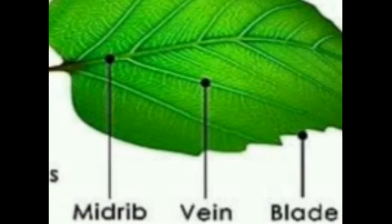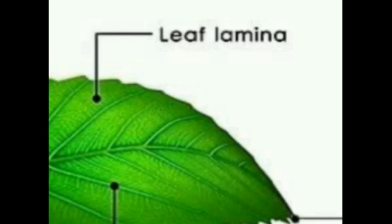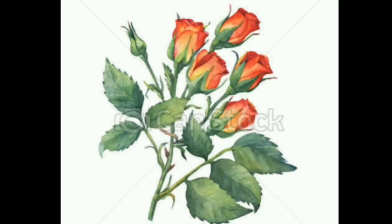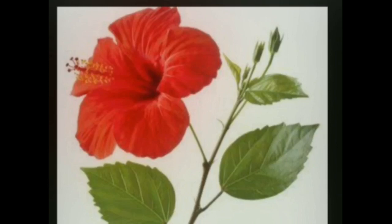Leaf lamina: the broad and green flat surface of the leaves is called leaf lamina. Leaf apex: the tip of the leaf blade is called leaf apex. Stipule: sometimes at the base of the petiole we can see two small green leaf-like structures that is called stipule. Examples: rose and hibiscus.